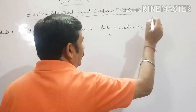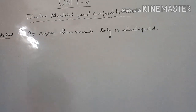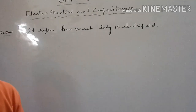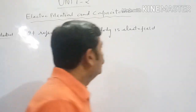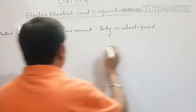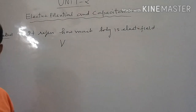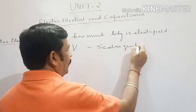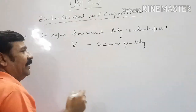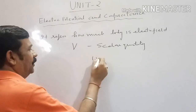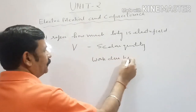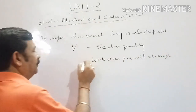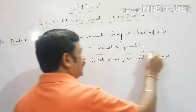The first topic of discussion today is electric potential. Electric potential means how much a body is electrified — how much electrical properties a body can show. It is represented by capital V. The symbol of electric potential is capital V. It is a scalar quantity and numerically defined as work done per unit charge. This is the numerical definition of electric potential.